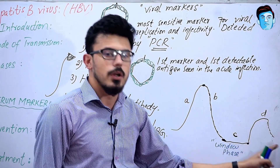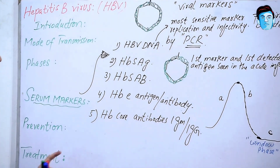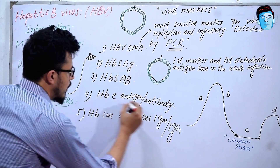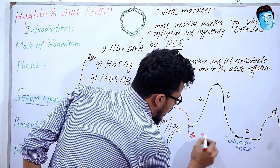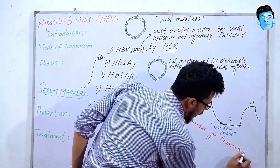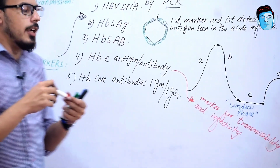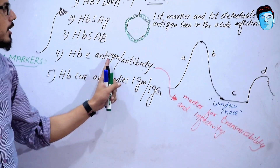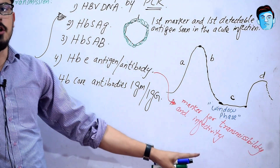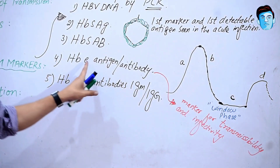Now, Hepatitis B e antigen and antibody. This is the serum marker for transmissibility and infectivity. If Hepatitis B e antigen is positive, it means the patient has the capacity and ability to transmit the disease actively. If the Hepatitis B e antibody is positive, it indicates that the disease is not being transmitted actively by that person.